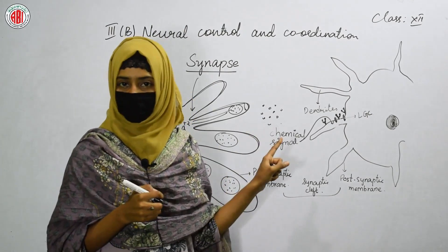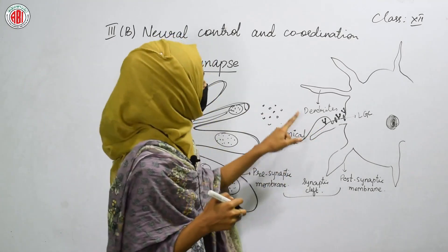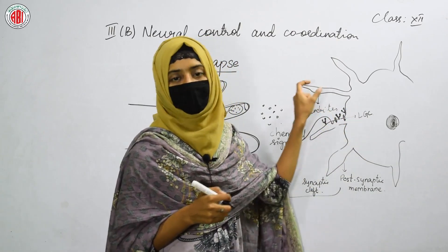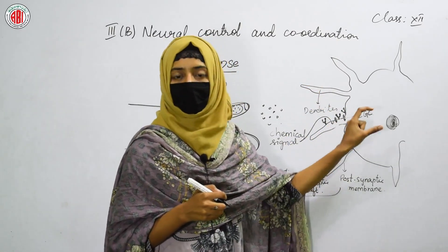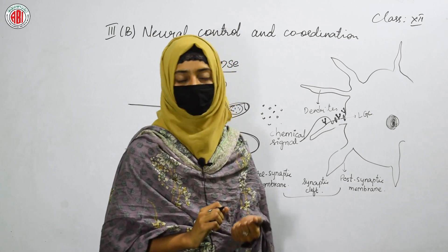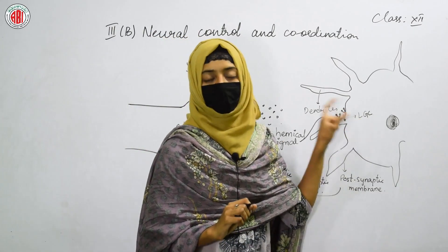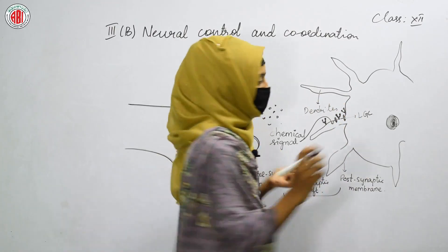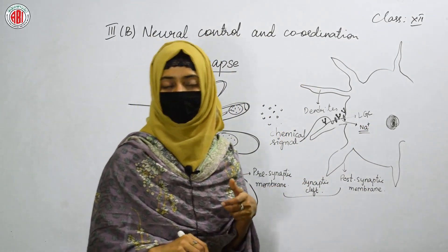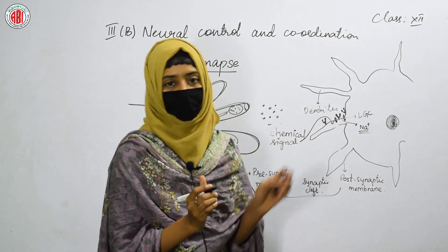As the chemicals are received by the receptors, this stimulates the opening of the ligand-gated channels. The ligand-gated channel opens and the chemical signal can enter into the nerve cell. The nerve cell can easily receive chemical signals due to the opening of the ligand-gated channel. Once the ligand-gated channel opens, it would show depolarization of the cell — meaning the sodium that is present in the interstitial fluid would start entering into the cell.